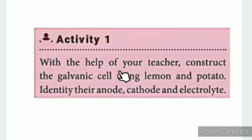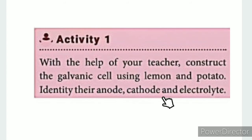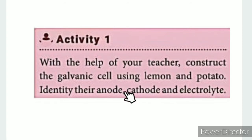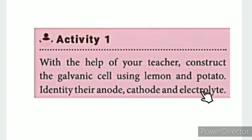Activity 1: With the help of your teacher, construct a galvanic cell using a lemon and a potato. Identify the anode, cathode, and electrolyte. This is done in science exhibitions where students connect a potato and lemon with an LED bulb. The lemon solution acts as the electrolyte.